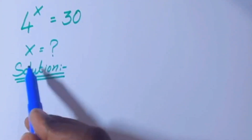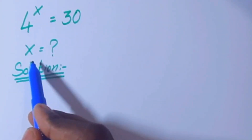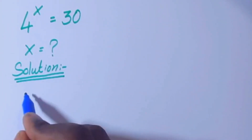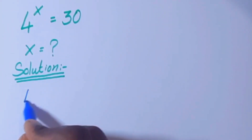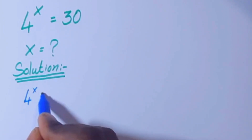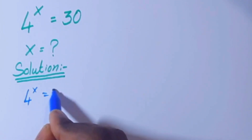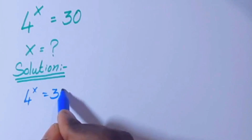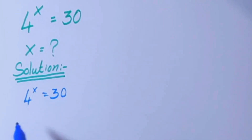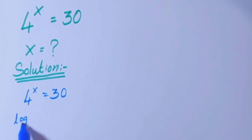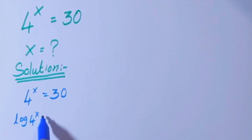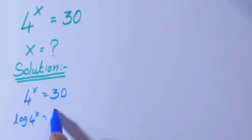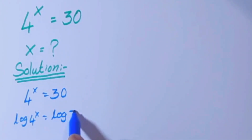Today we are going to solve this equation to find the x value. The equation is 4 to the power x equals 30. Now take log on both sides: log 4^x equals log 30.